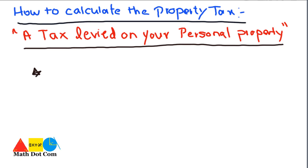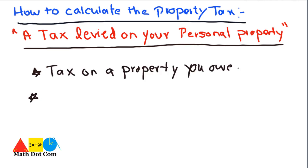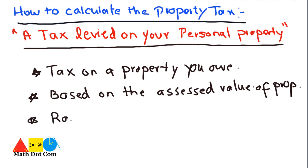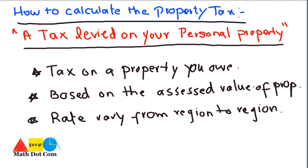A few things to keep in mind: it is a tax on a property you own; it is based on the assessed value of the property, which we will discuss later; and its rate varies from region to region — it is not universal. If you live in the USA the rate will be different than if you live in India, and different states have different rates.